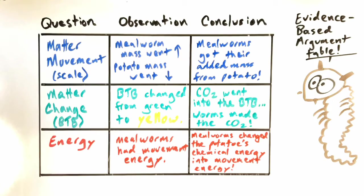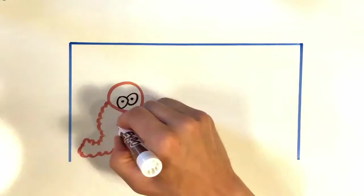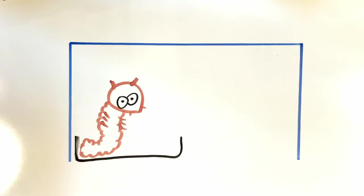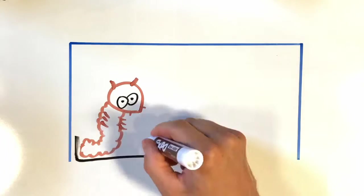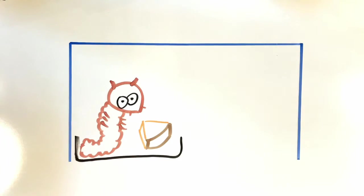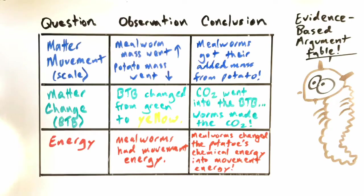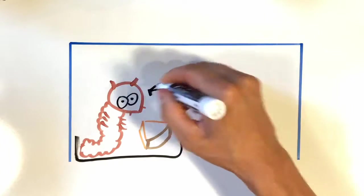So here we've concluded our evidence-based argument table. And this is fantastic because it gets us a lot closer to our goal of being able to model what happens when an animal eats food. So let's model what's happening by using our conclusions. So inside of our transparent dish, we had our worms. We also had their food, the potato. And we concluded that the mealworms got their added mass from the potato. So let's model that.